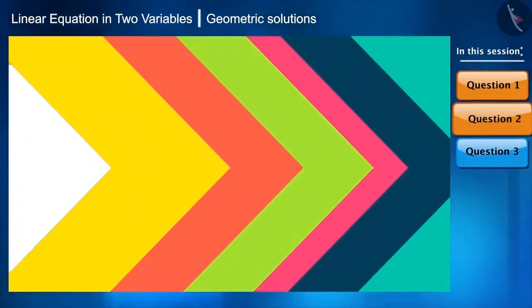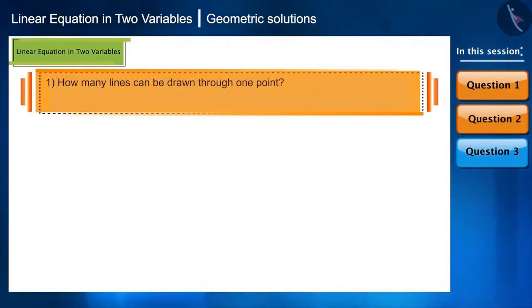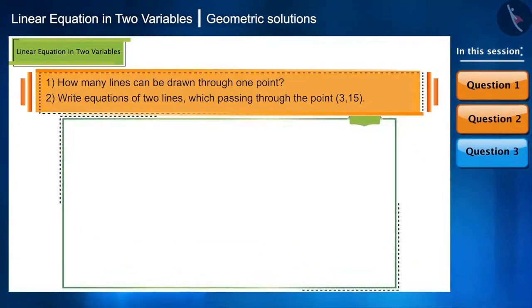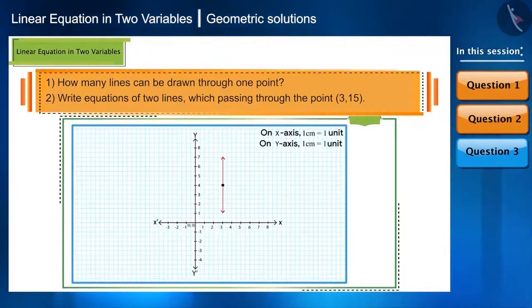Now let's look at the next question. Explain how many lines can be drawn through a point and also write equations of two lines passing through the point 3 comma 15. First of all, infinite number of lines can be drawn through one point.